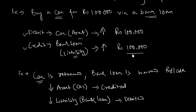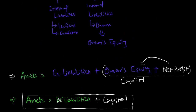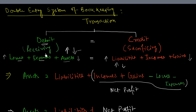I hope this makes it clear that the rule — losses, expenses, and assets are debited — holds true for positive movement in their values, i.e., when they increase. But if there is a decrease, the effect is the opposite: a downward movement in losses, expenses, or assets will be a credit. And a downward movement in liabilities, incomes, or gains, instead of being a credit, will be a debit.